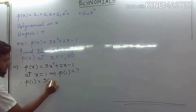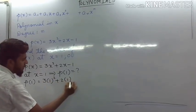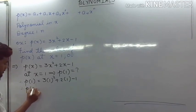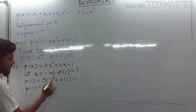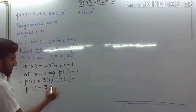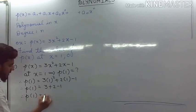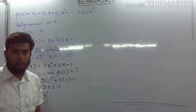We get 3 into 1 squared plus 2 into 1 minus 1. Since 1 squared is 1, this gives us 3 plus 2 minus 1, therefore the value of the polynomial p(1) is 4. Thank you.